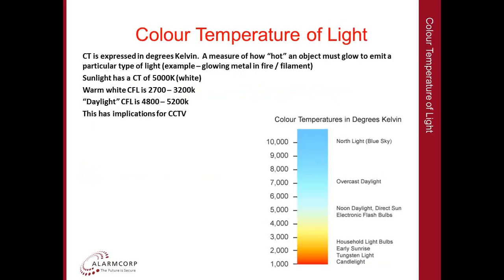Color temperature of light. Color temperature is expressed in degrees Kelvin. It is a measure of how hot an object must glow in order to emit a particular color of light. The best example is to imagine putting a metal poker in a fire. As it gets hotter and hotter, it will eventually start glowing first a dull red, then a brighter red, then orange, then yellow, and eventually it will get to white hot. Assuming the metal wouldn't melt, you could actually get the metal to be glowing blue.